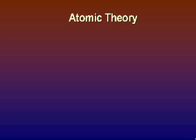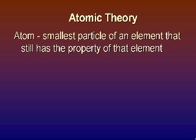Now let's talk about atomic theory. The theory is this: if I took a little piece of aluminum and tore it in half, then took that piece and tore it in half, again and again — if I could keep tearing it down to the very smallest particle of aluminum that has the properties of aluminum, that's known as an atom. No one has ever seen an atom. It's the smallest particle of an element — copper atoms, nickel atoms, hydrogen atoms. They still have the property of that element.